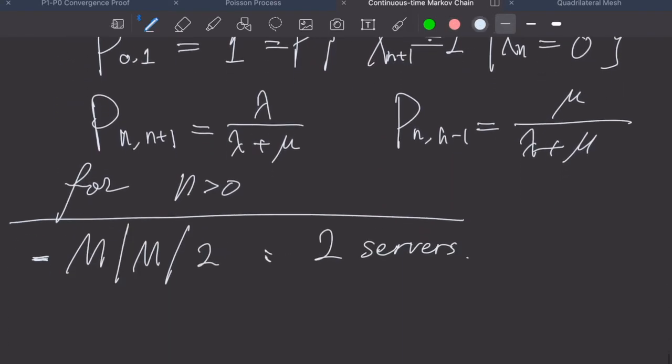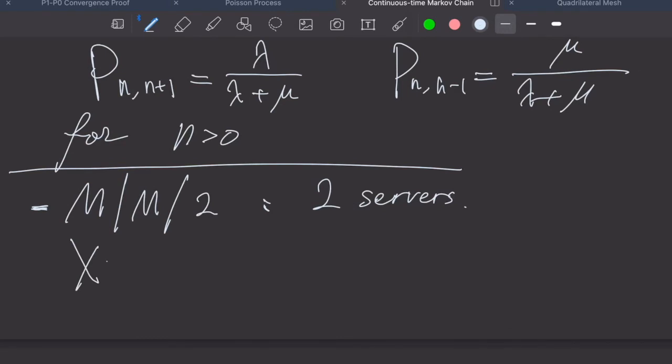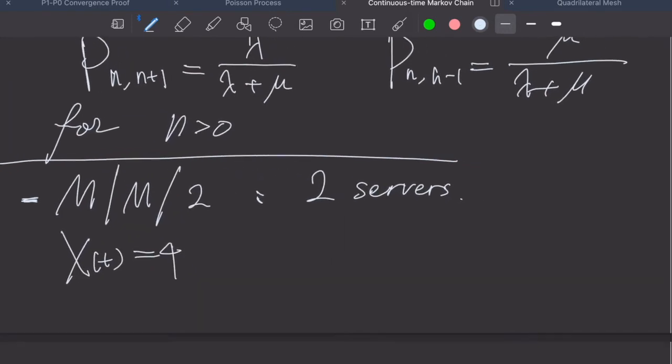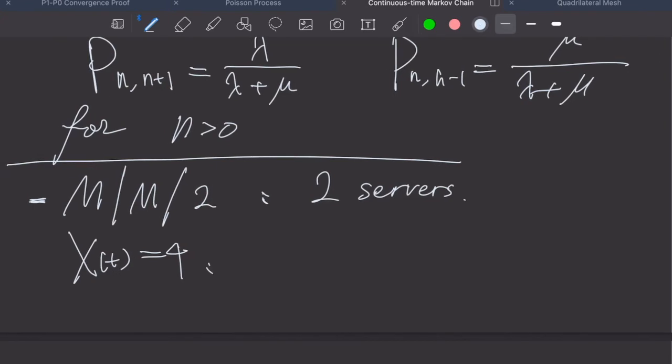Because we have two servers, for example, what if X(t) is 4? It simply means, because we have two servers, we must have two in service and we have another two in the queue.